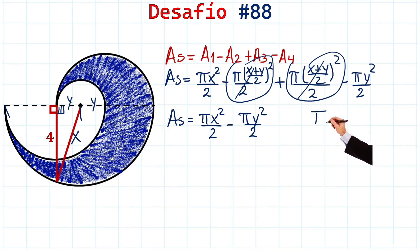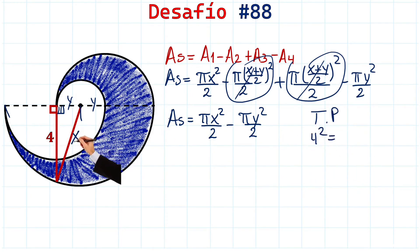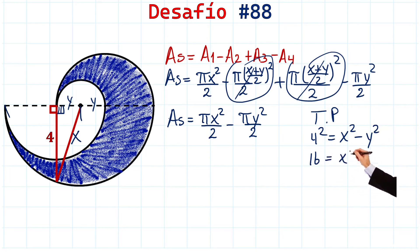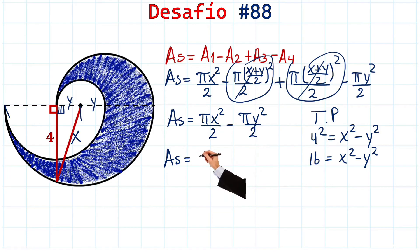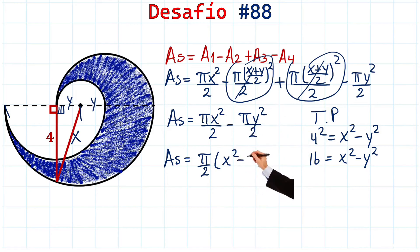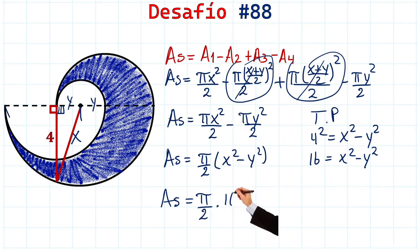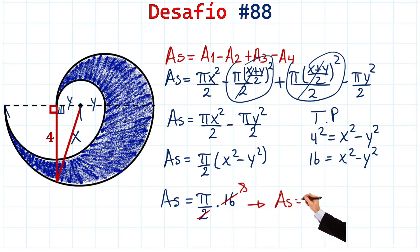We can apply the Pythagorean theorem: 4 squared equals the difference between the hypotenuse squared, which is x squared, minus the other side squared, which is y squared. So we have 16 = x² − y². Now we factor out π/2 as a common factor from the shaded area expression, giving us (π/2)(x² − y²). Since x² − y² = 16, we substitute to get (π/2) × 16, so the shaded area equals 8π square units.